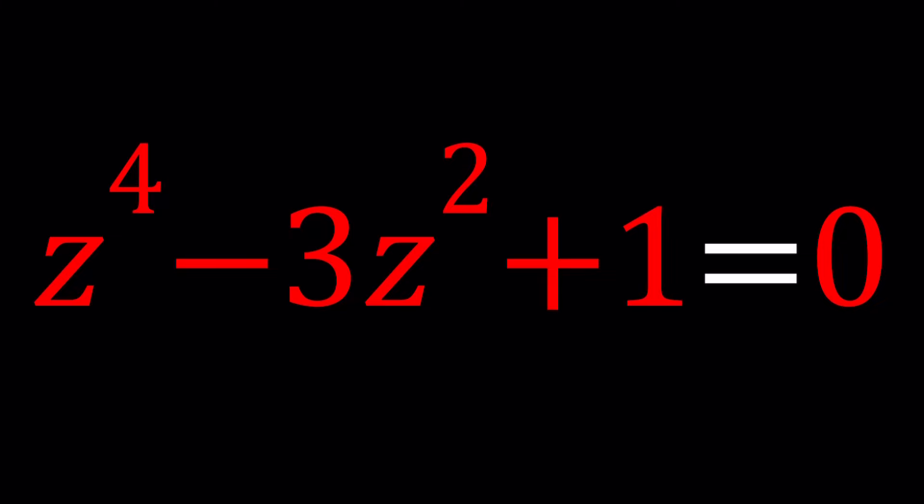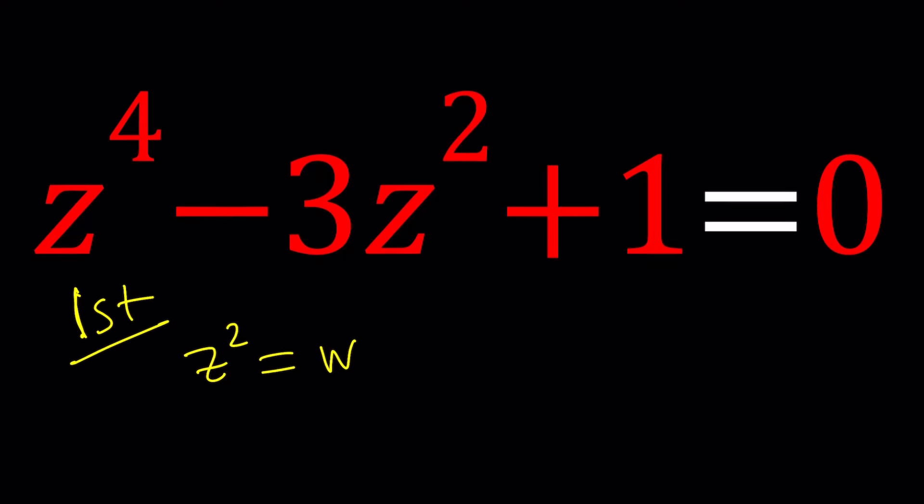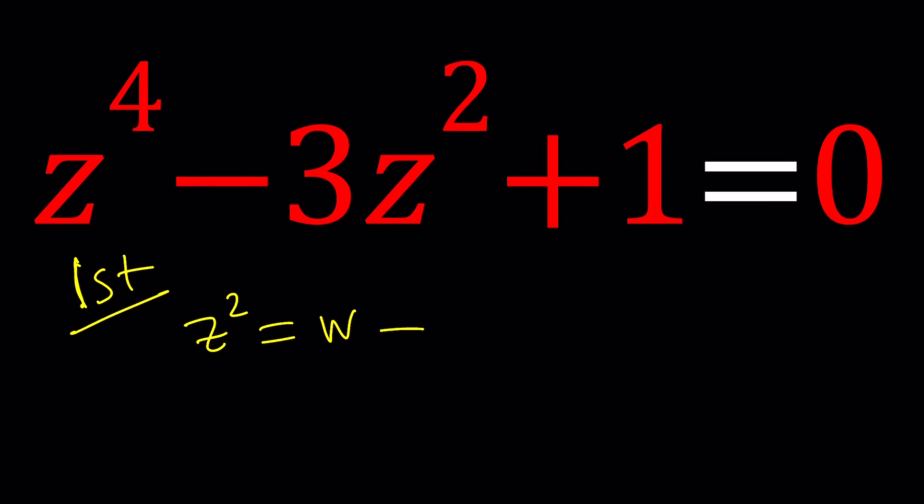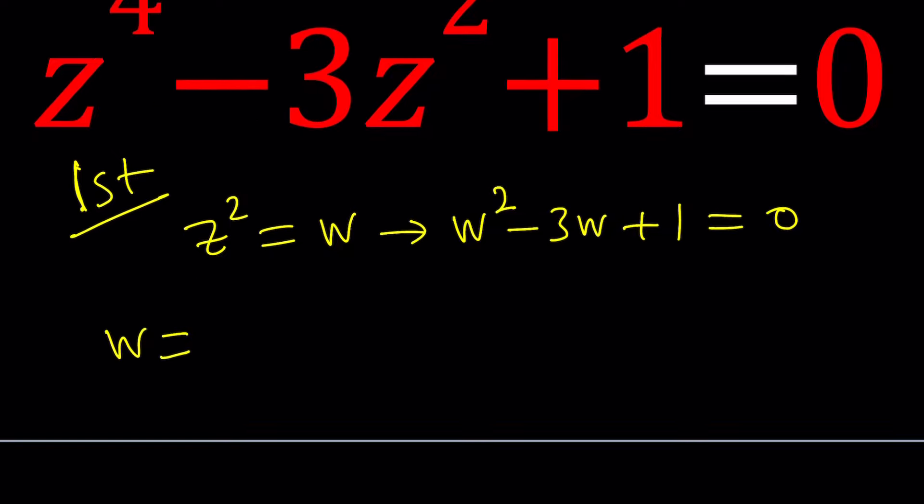So first method - for my first method I'm going to use substitution and replace z squared with something like w. This is nice because it's going to reduce the degree from a quartic to a quadratic and I'm going to be getting w squared minus 3w plus 1 equals 0. This is a quadratic equation that can be easily solved.